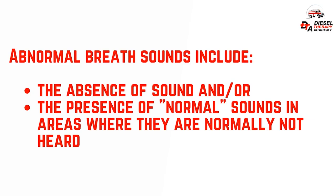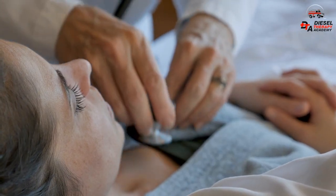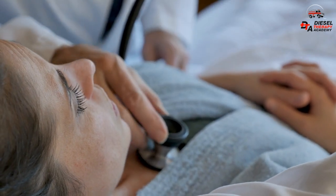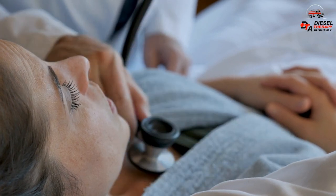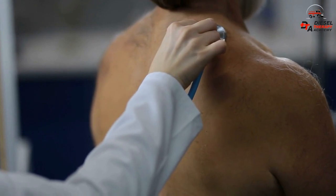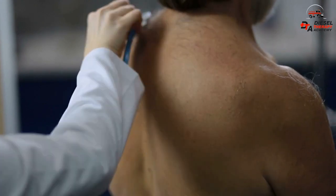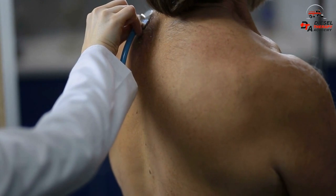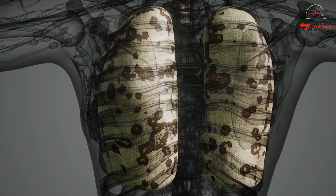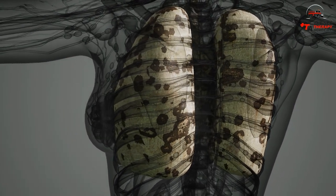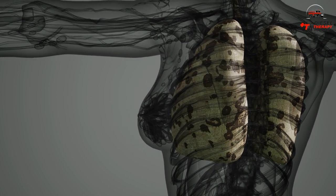Abnormal breath sounds include the absence of sound or the presence of normal sounds in areas where they are normally not heard. For example, bronchial breath sounds are abnormal in peripheral areas where only vesicular sounds should be heard. When bronchial sounds are heard in areas distant from where they normally occur, the patient may have consolidation, as occurs with pneumonia, or compression of the lung. These conditions cause the lung tissue to be dense, transmitting sound from the bronchi much more efficiently than through the air-filled alveoli of the normal lung.